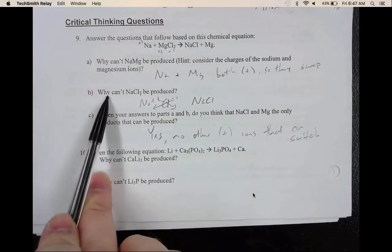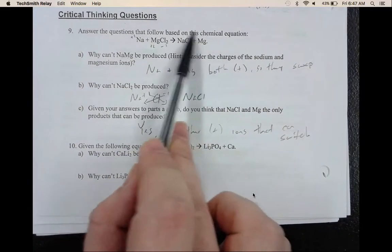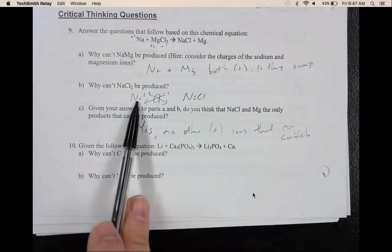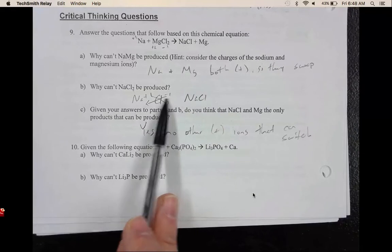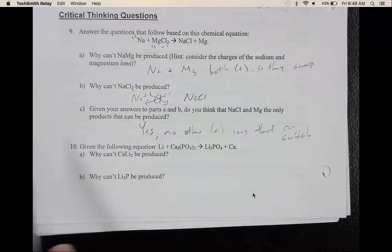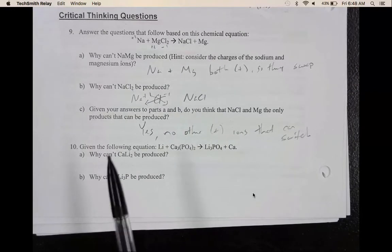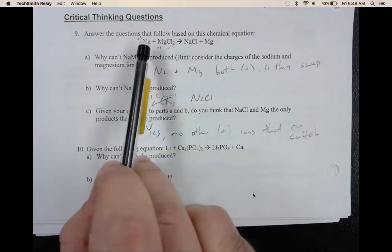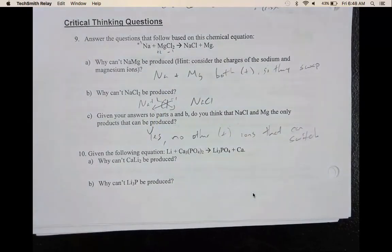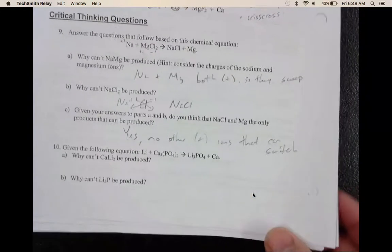Next, we're looking at why can't NaCl2 be produced? So remember, this reminds us that we need to crisscross when we combine our new elements. So when sodium and chlorine combine, sodium has a positive 1 charge, chlorine has a negative 1 charge. So when we crisscross, there will be both 1s for the subscript. So we don't have to write that. And then given our answers to A and B, do we think NaCl and Mg are the only products that we can produce? And the answer is yes. No other positive ions are present that can switch with the magnesium. Remember, the same sign charges have to switch. So now base what you do in 10 off of what I did in 9.